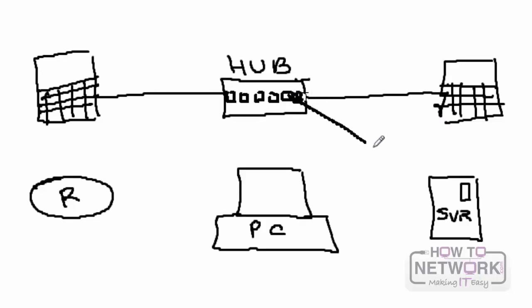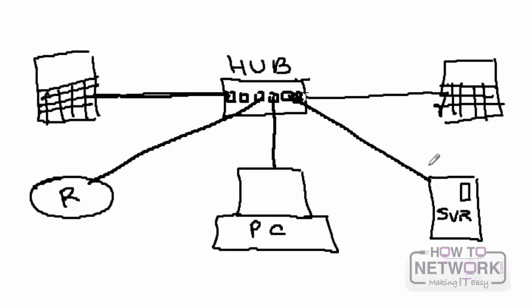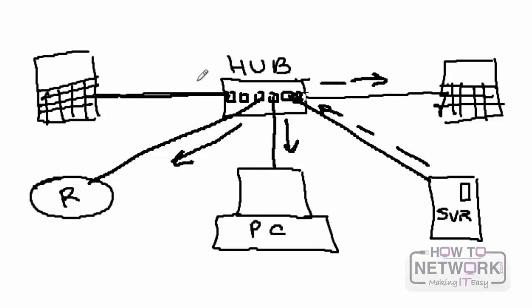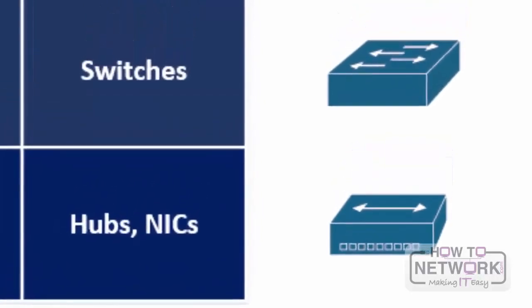Hubs are network devices that operate at layer 1 and connect multiple devices all on the same local area network. Unlike switches, hubs do not have any intelligence and do not process packets — they simply forward them. Their main function is to send all data received on a port to all other ports, so devices receive all packets that traverse the network even if they are not addressed to them. For this reason hubs are also called repeaters. They work fine in very small offices but are not efficient at scale.